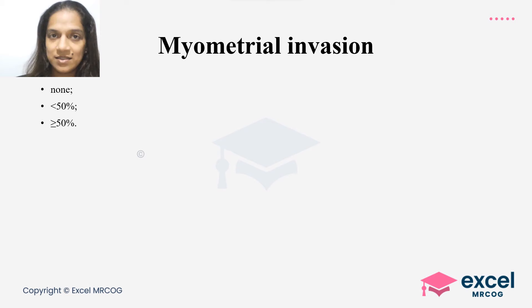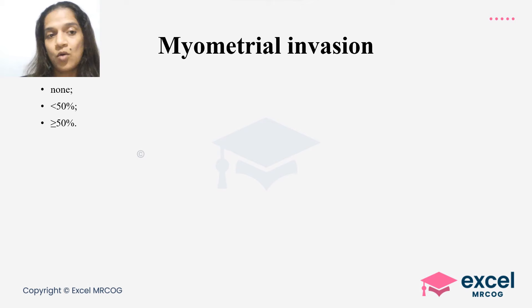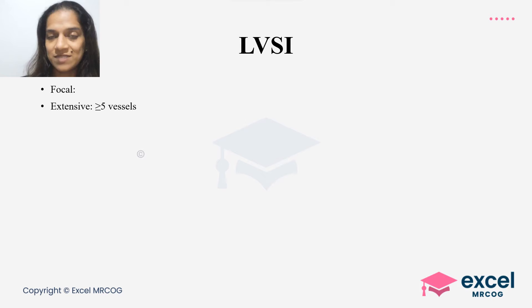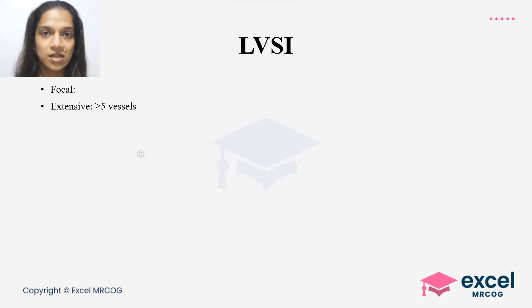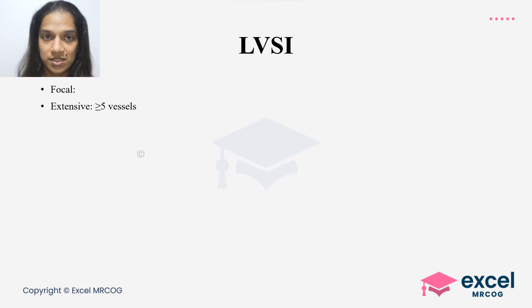Next is myometrial invasion. Earlier, stage 1 was classified as 1a (less than 50%) and 1b (more than 50%). Now a new stage has been added where the tumor is limited to the endometrium with no myometrial invasion. Lymphovascular space invasion (LVSI) is invasion of the lymphatic and vascular spaces within the tissue, and is not equivalent to lymph node involvement beyond the uterus. There are two varieties: focal and extensive — extensive being five or more vessels infiltrated.